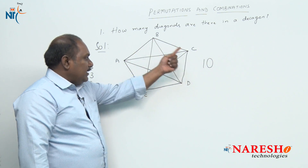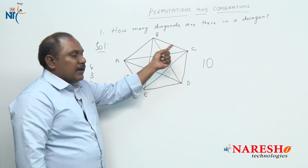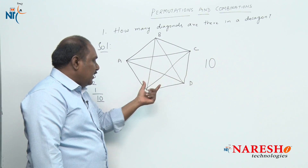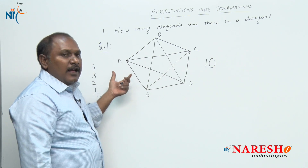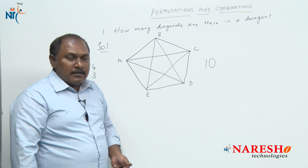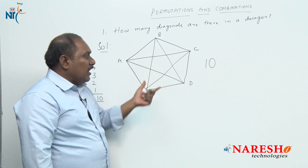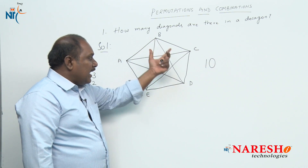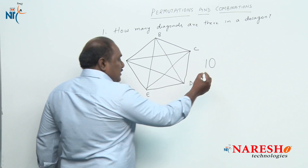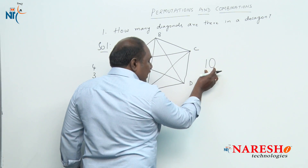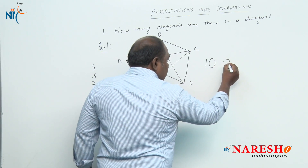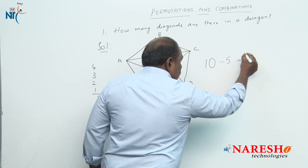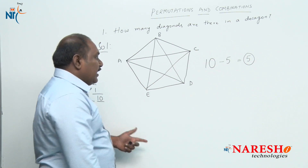In this pentagon ABCDE, the sides are AB, BC, CD, DE, and AE. All the other line segments are the diagonals. So out of the total 10 line segments we have drawn, we have five sides. From total 10 line segments, we subtract the number of sides to get the number of diagonals. So a pentagon has five diagonals.